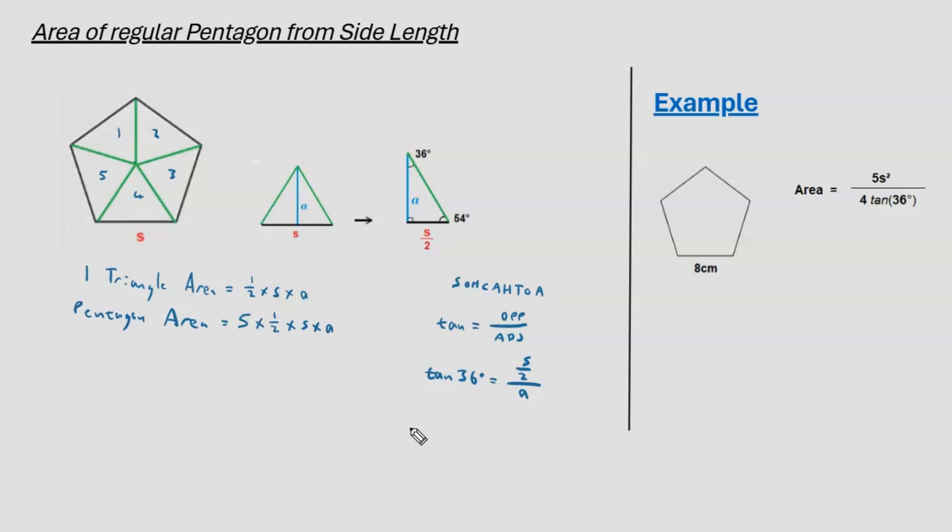Now, the fraction on the right can be flipped around if on the left, instead of tan 36 degrees, we write 1 over tan 36 degrees. So, on the right we now have A over S over 2. Now, from here, we can actually multiply both sides by S over 2. It doesn't change the overall value of everything, so what we have on the left is S over 2 tan 36 degrees. And what happens on the right side is S over 2's cancel, and we're left with A by itself.